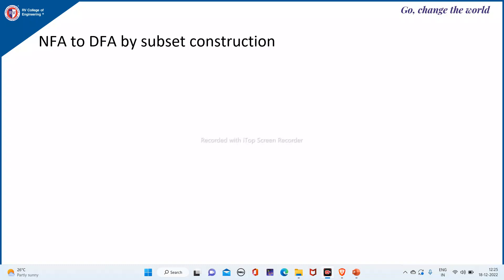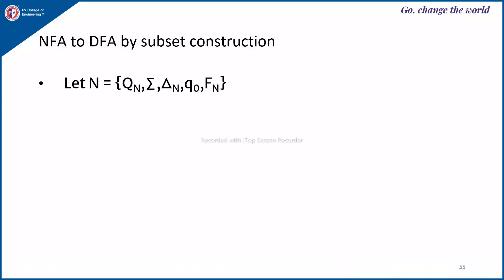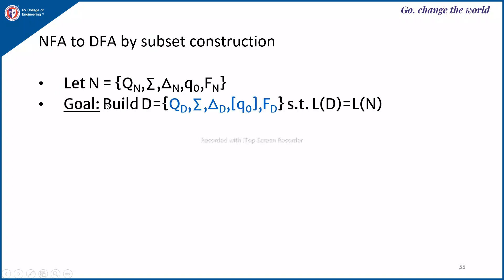The input is the NFA. Let us consider the given NFA is represented by N equals to Qn, sigma, delta-n, Q0, and Fn. The goal is to build an equivalent DFA D with Qd, sigma, delta-d, start state represented as Q0 within a square bracket, and Fd, such that L of D is equal to L of N.